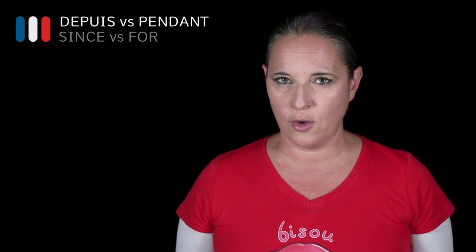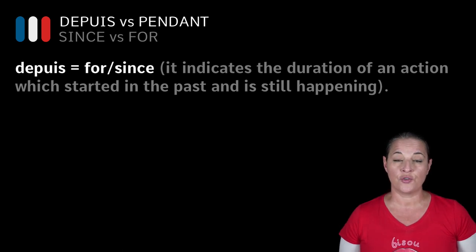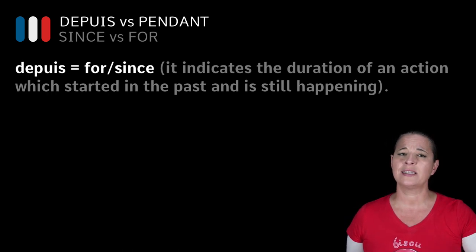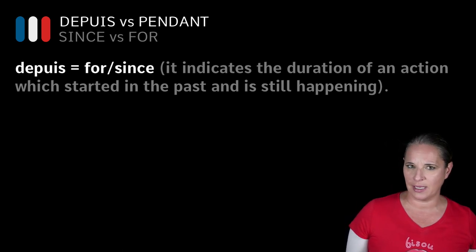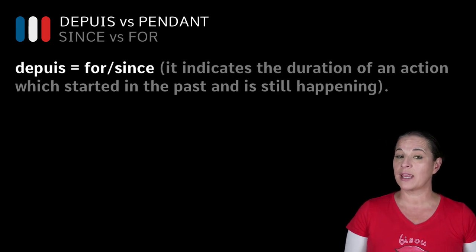How do we say 'since' and 'for'? Well, we can either say 'depuis' or 'pendant.' Let me show you how we use 'depuis' to start with. 'Depuis' is a preposition which indicates the duration of an action which started in the past and is still happening. So it can mean 'for' or 'since.'